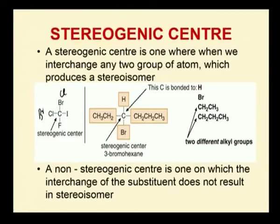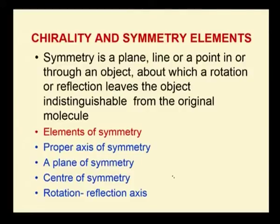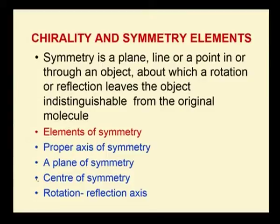A non-stereogenic centre is one on which the interchange of substituents does not result in producing a stereoisomer. Now, how do symmetry elements play an important role in chirality? First, we define symmetry: symmetry is a plane, line, or point in or about which you can perform rotation, reflection, or inversion that leaves the object indistinguishable from the original one. A symmetry operation is the action carried out on a molecule such that the result is identical to the original.